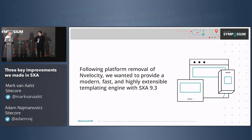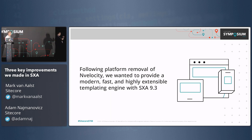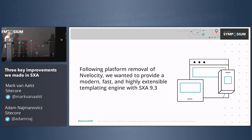With 9.3, NVelocity is gone. It's gone from the platform and we cannot make use of it. We've had a few options. Should we take NVelocity? Let's look at the forums: 'Is NVelocity dead?' — Year 2010. Yeah, let's not keep with NVelocity. It's not really the engine of the future.